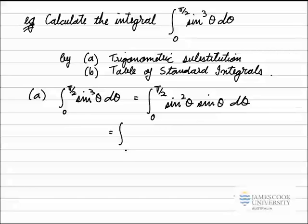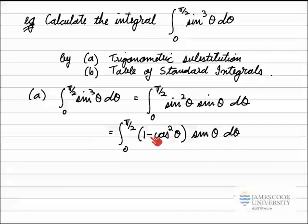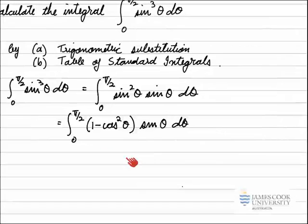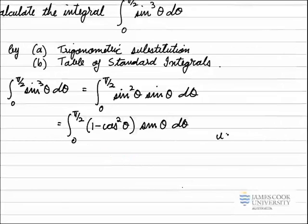Let's proceed with that. It's still the same integral from zero to pi on two. I transform the sine squared theta into one minus cos squared theta, multiplied by sine theta d theta. Now I look to make a substitution: I'm going to let u equal cos theta, so I'll get one minus u squared here. I let u equal something whose derivative is on the top line. The derivative of cos theta is negative sine theta, but that will cancel out when I transform the differential.